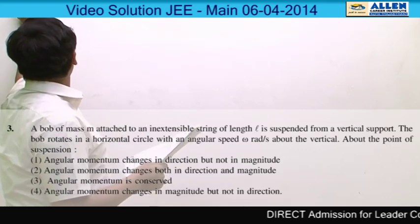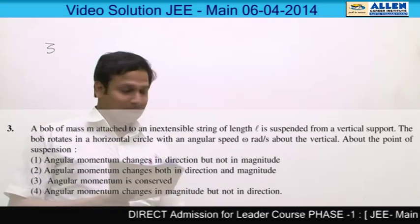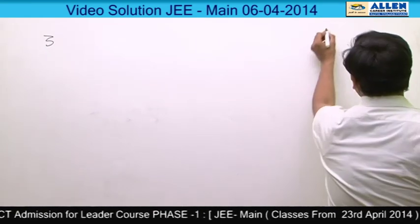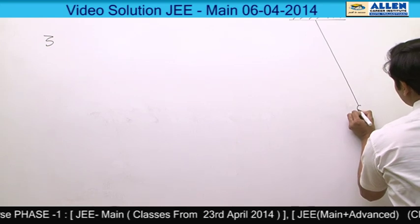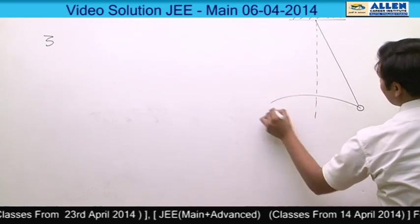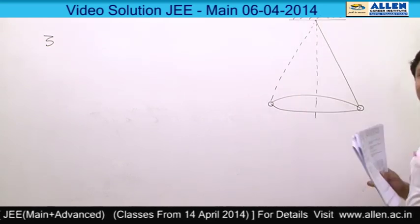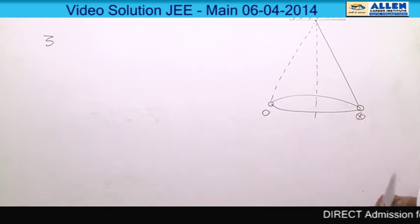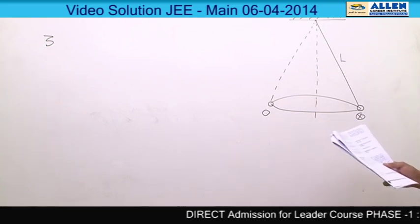Question number 3. The basic concept behind this question is conical pendulum and angular momentum. A bob of mass M attached to an inextensible string of length L is suspended from a vertical support. We have a bob suspended by a string of length L, and this pendulum is rotating conically with angular velocity omega. At one point the bob is going inside and at another point the bob is going outside. The string length is L and the mass is M.